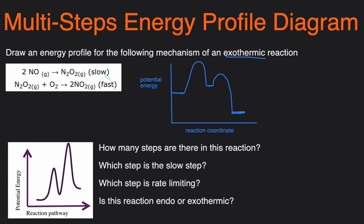Just to summarize what happened, this is a two-step reaction so that's why we have two peaks. The first step is slow, so that's why the peak of the first curve is bigger than the peak of the second curve. And it's exothermic so that's why the products have less energy than the reactants.